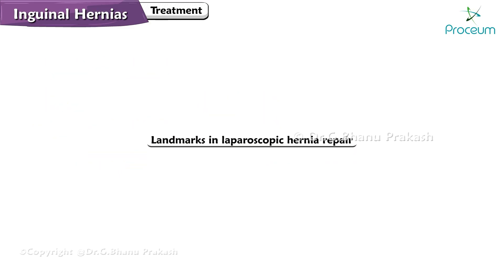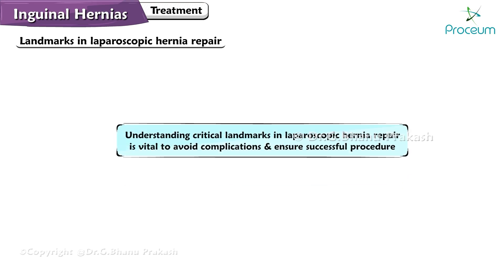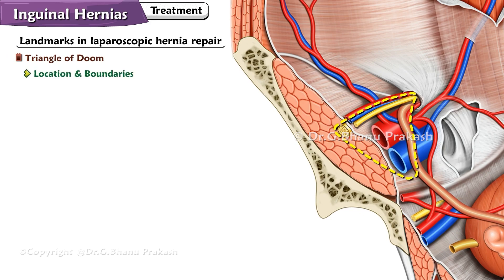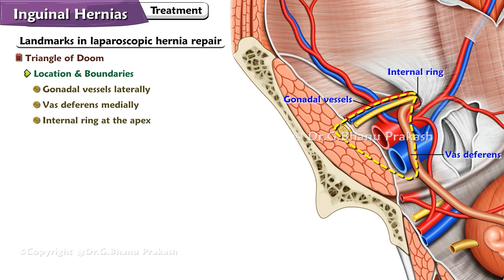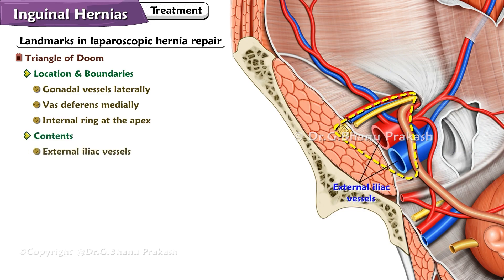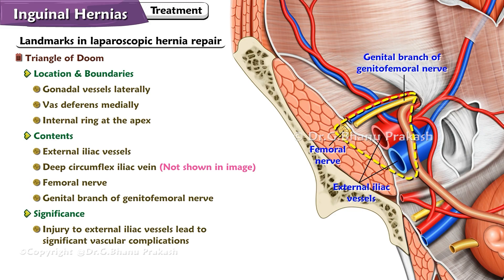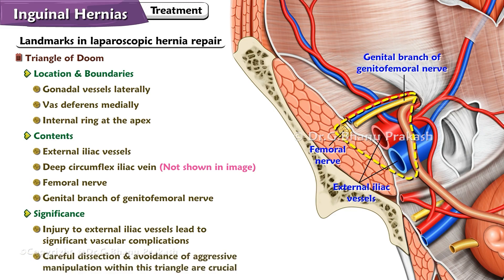Landmarks in laparoscopic hernia repair: Understanding the critical landmarks is vital to avoid complications and ensure a successful procedure. The Triangle of Doom is defined by the gonadal vessels laterally, the vas deferens medially, and the internal ring at the apex. This area contains vital structures such as the external iliac vessels, the deep circumflex iliac vein, the femoral nerve, and the genital branch of the genitofemoral nerve. Injury to the external iliac vessels within this triangle can lead to significant vascular complications, so careful dissection and avoidance of aggressive manipulation are crucial.